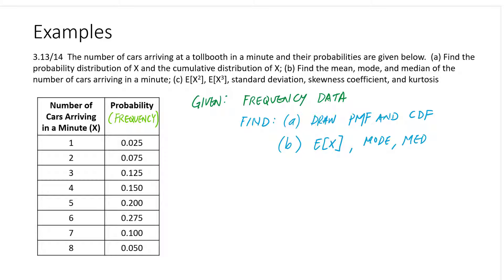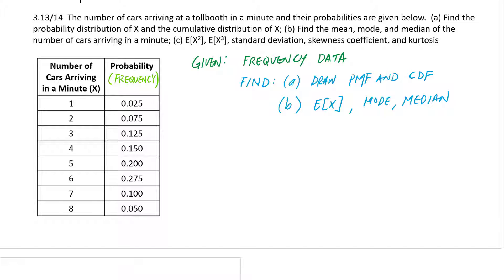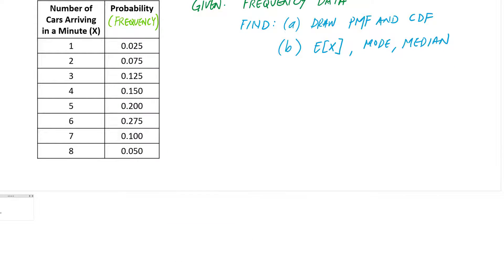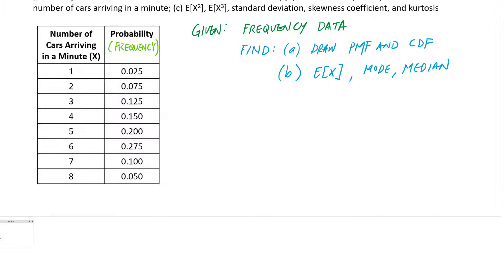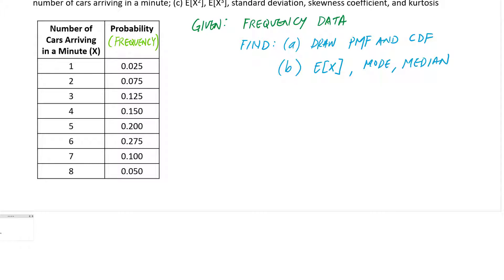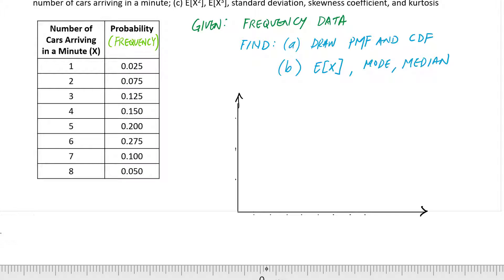The PMF is quite simply a plot of this data that's given to us, so it's not really that difficult. That PMF would look like this, and these are my possible outcomes of X, which is really the number of cars.